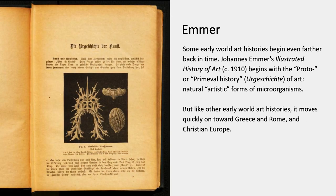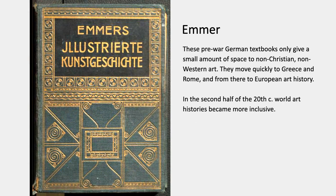Some of these early German world art histories start even further back in time. There's one by a scholar named Johannes Emmer, which begins with what he calls proto- or primeval history — Urgeschichte of art — which covers natural artistic forms made by microorganisms, plankton. But then he goes really quickly toward Greece and Rome and then up toward Christian Europe. These pre-war German textbooks give only a small amount of space to non-Christian, non-Western art.